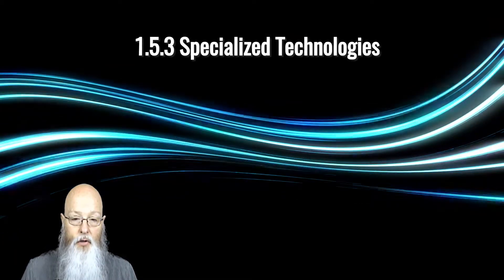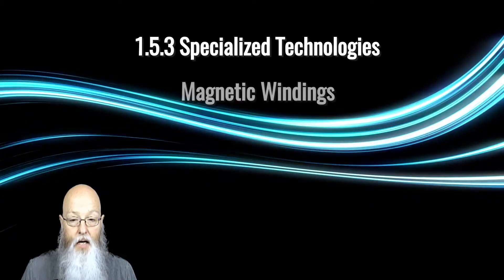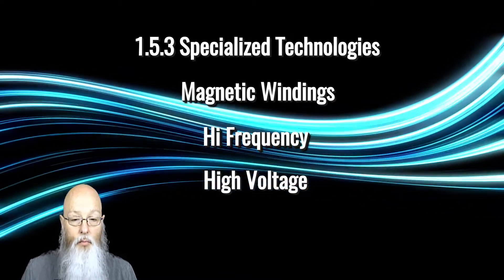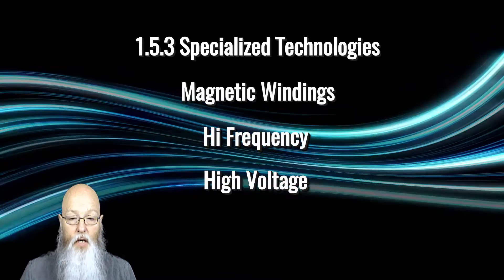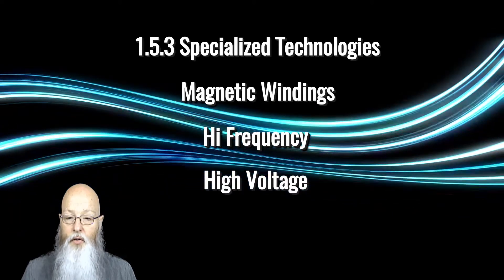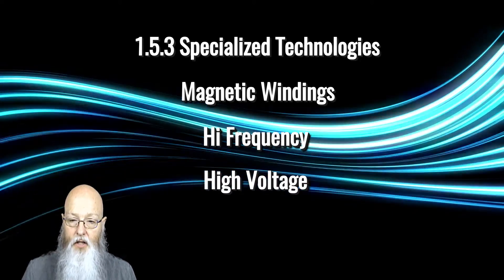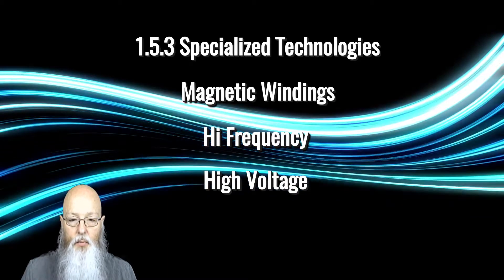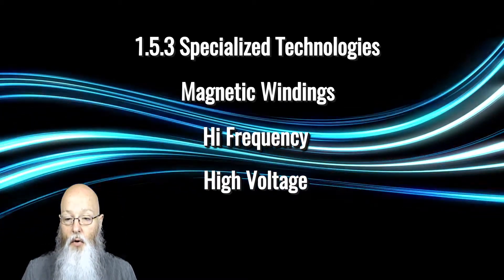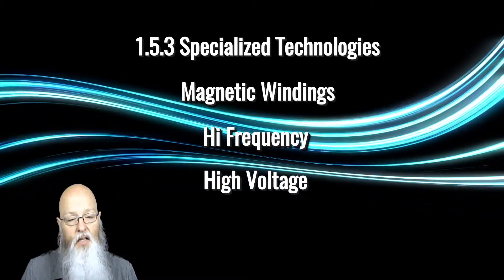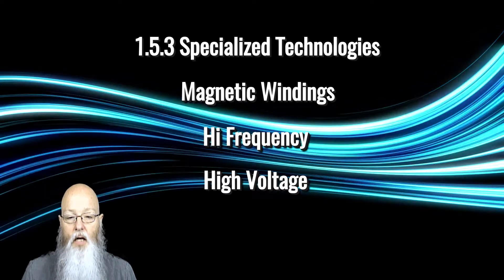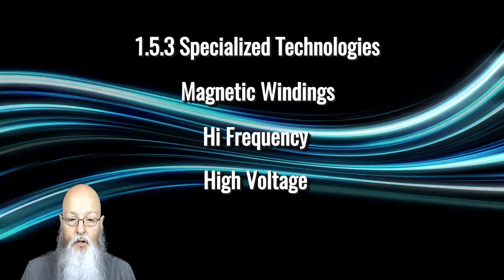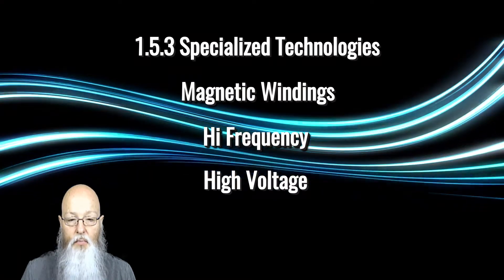Next, we move to paragraph 1.5.3. Magnetic windings, high frequency, and high voltage information have all been moved into subsections of 1.5.3 Specialized Technologies. There are no substantive content changes, but the move indicates that the document committee recognizes that all these areas are specialized and will require agreement between the manufacturer and customer for the acceptability of those assemblies.